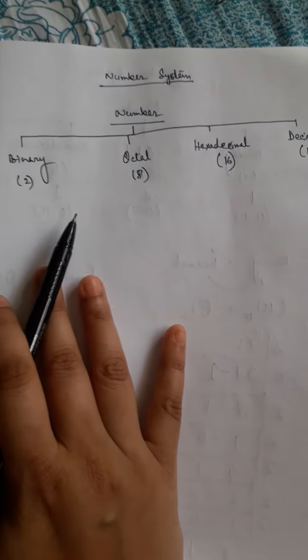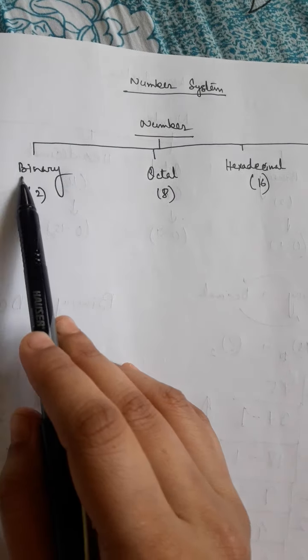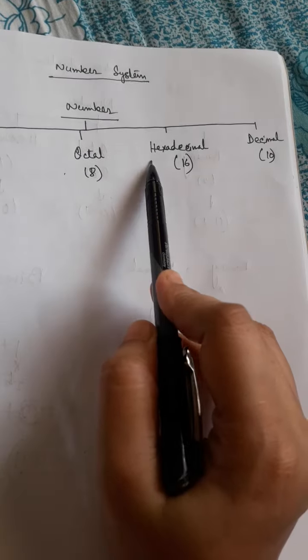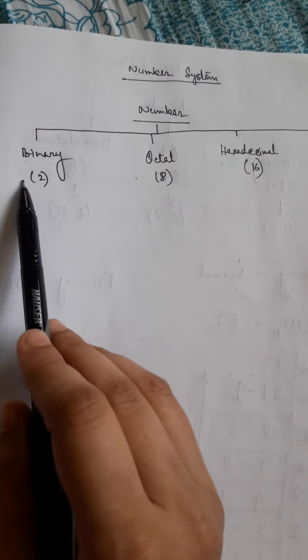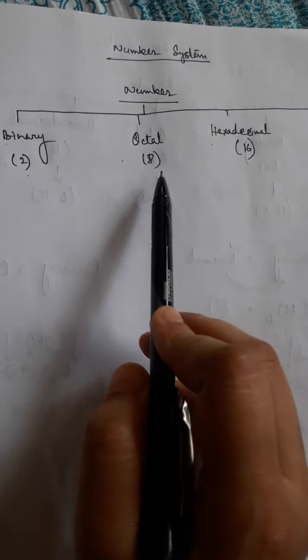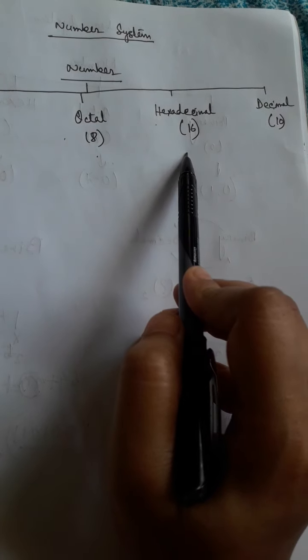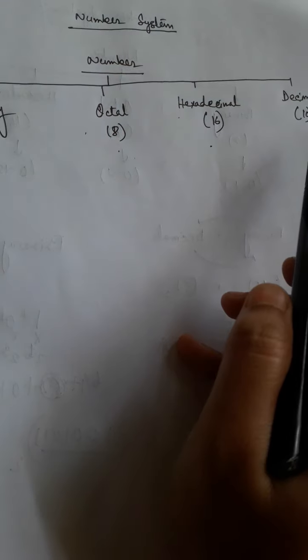Basically, there are four types of number systems. They are binary, octal, hexadecimal and decimal. Binary base is 2, octal base is 8, hexadecimal base is 16 and decimal base is 10.